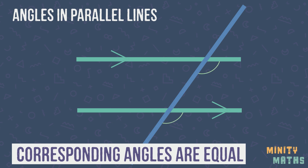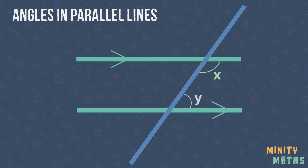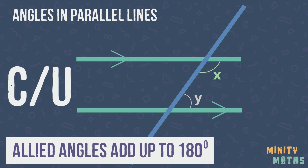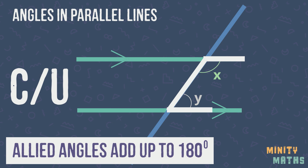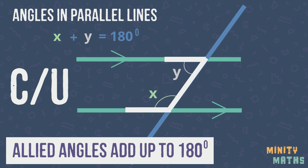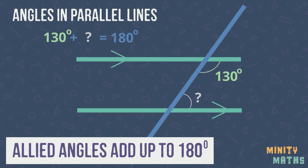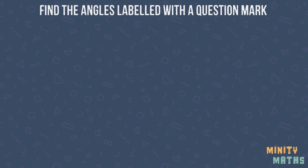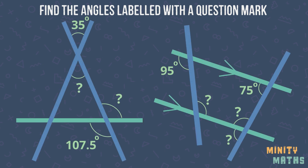Now let's look at this example. Allied angles are angles which can be found within a C or U shape. These angles always add up to 180 degrees. Again, the C shape can actually be backwards. Here is an example. Have a go at these questions — pause the video while you figure them out, and try to note down the explanations of how you calculated each angle.